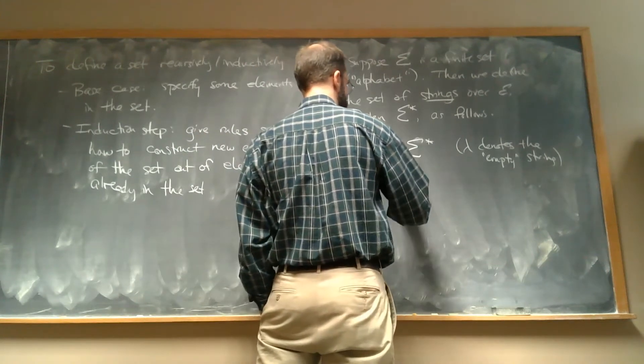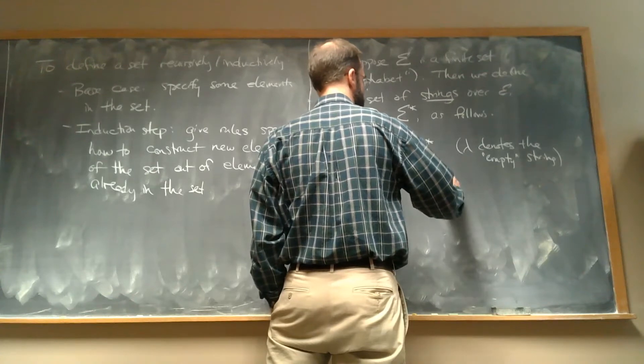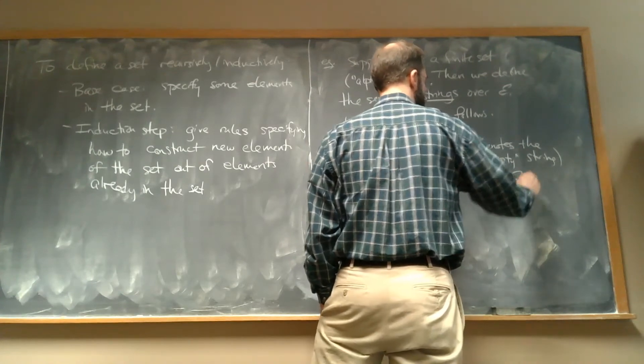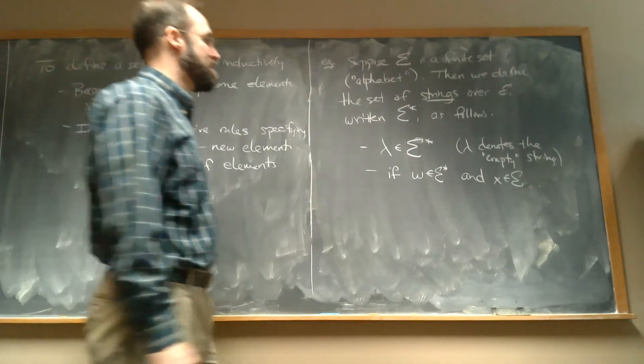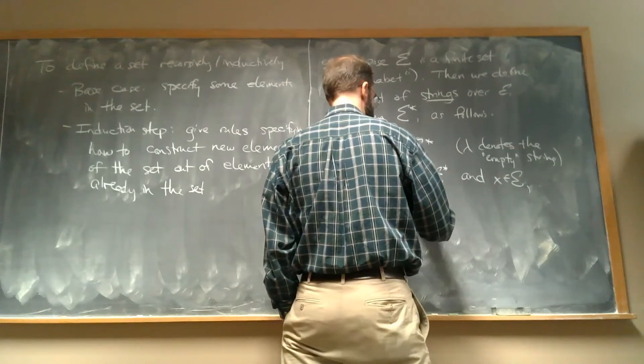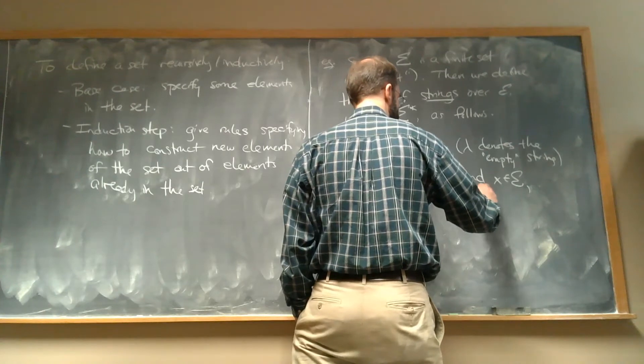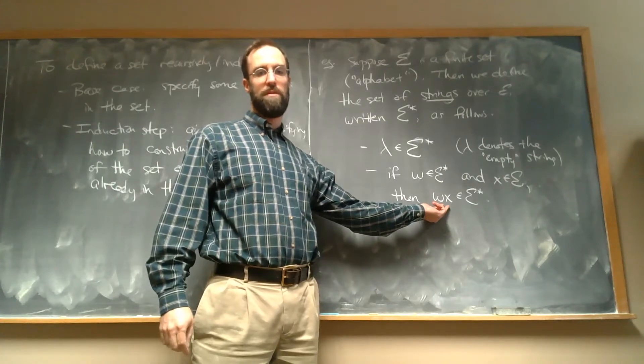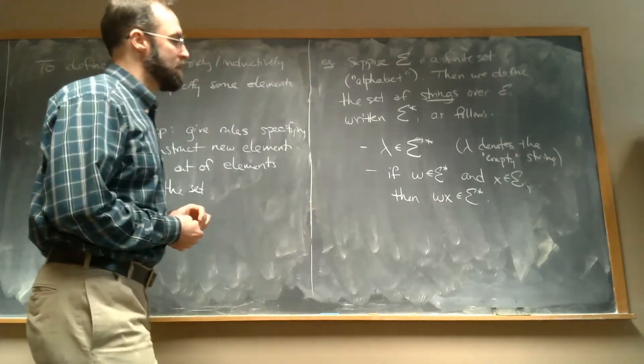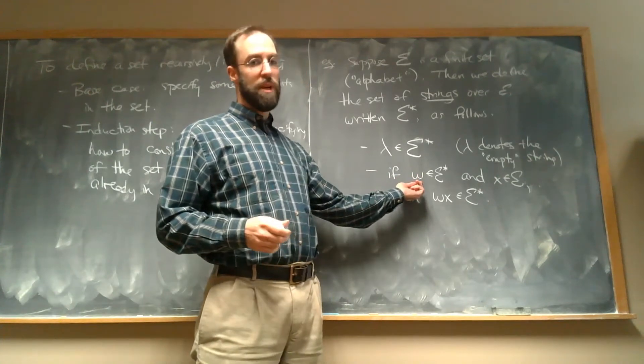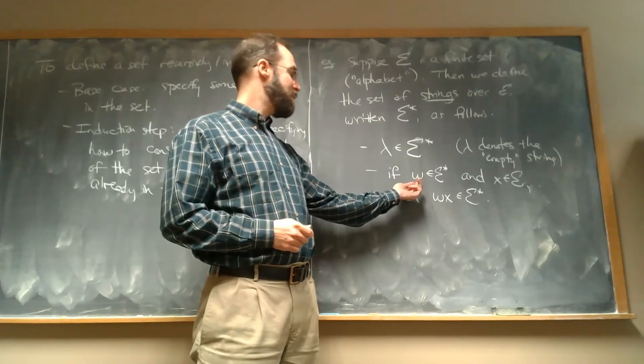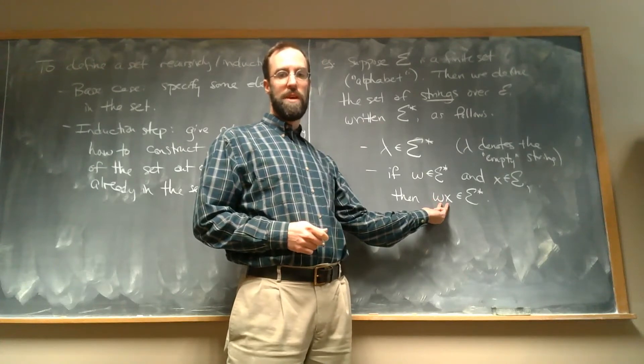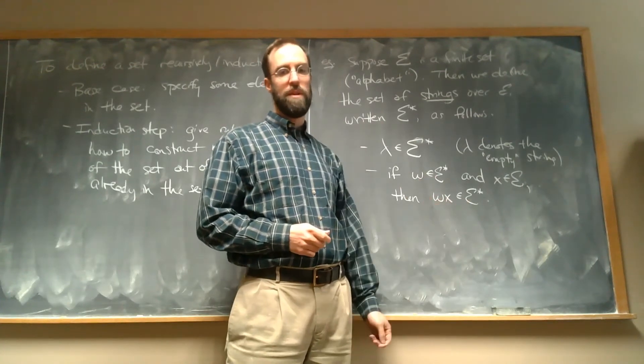And then we say, if w is some element of sigma star, and x is an element of my alphabet set, then wx is also in sigma star. And this doesn't mean multiplication, this just literally means put one next to the other. If we have a string that's already in this set, and we have some element of our alphabet, then we can glue the letter onto the end of the string, and that thing is also a string.